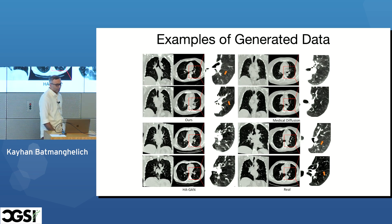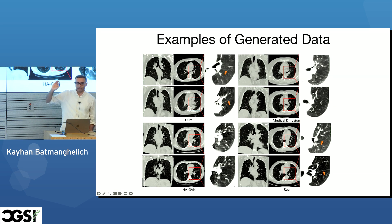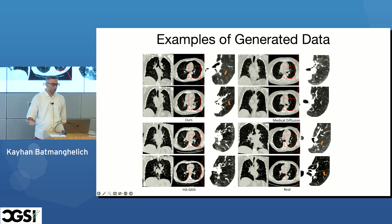Looking at results: this is an example showing the fissure line that I mentioned is clinically important. You can see it clearly in real data, and you can also see it in our generated data — while previous state-of-the-art methods using generative adversarial networks or diffusion would not be able to preserve it.